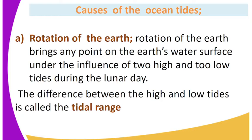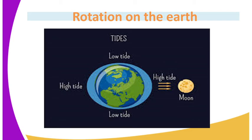Some of the causes of ocean tides include: a, rotation of the earth. Rotation of the earth brings any point on the earth's water surface under the influence of two high and two low tides during the lunar day. The difference between the high and low tides is known as tidal range. We can have a look at the rotation of the earth as a cause of tides.